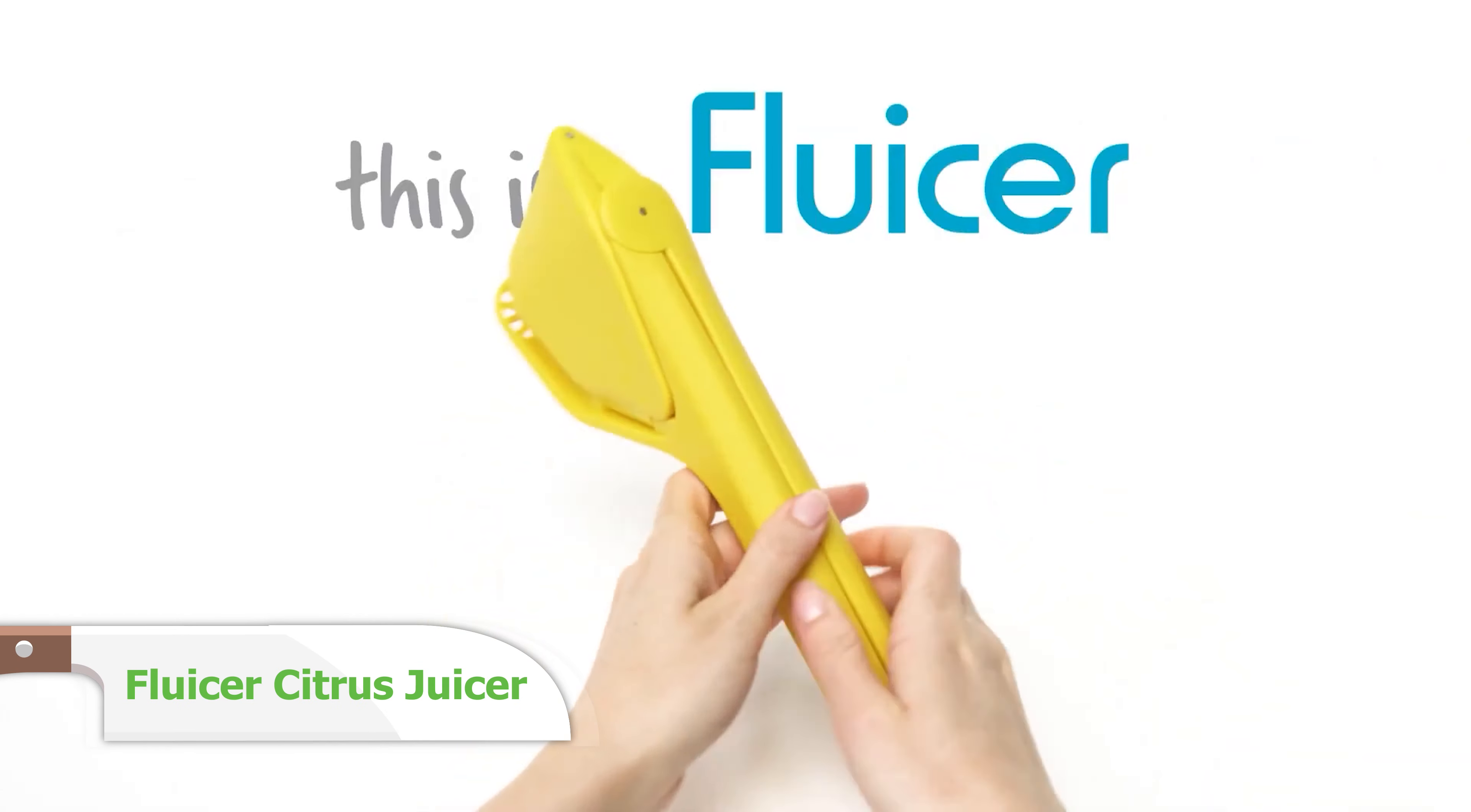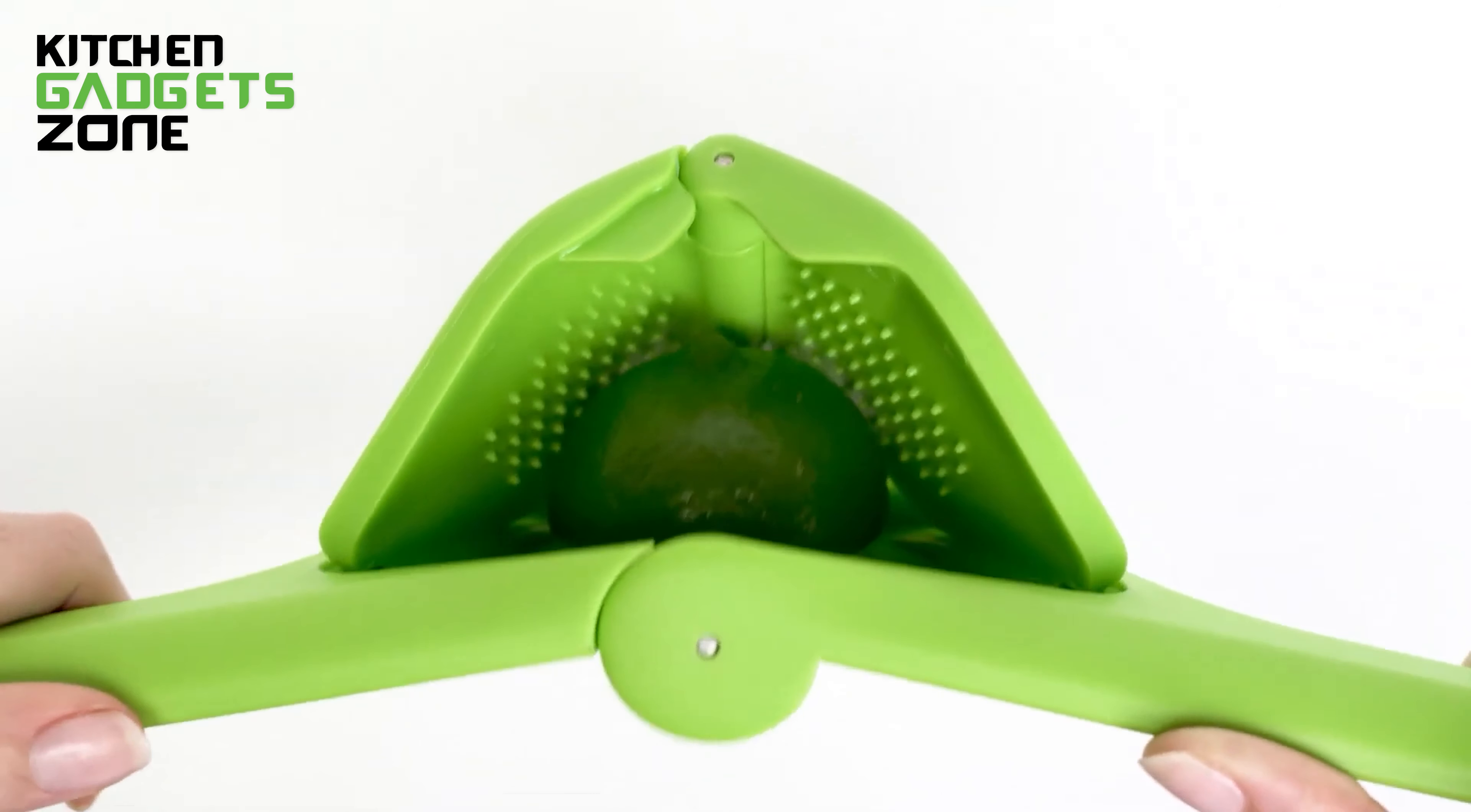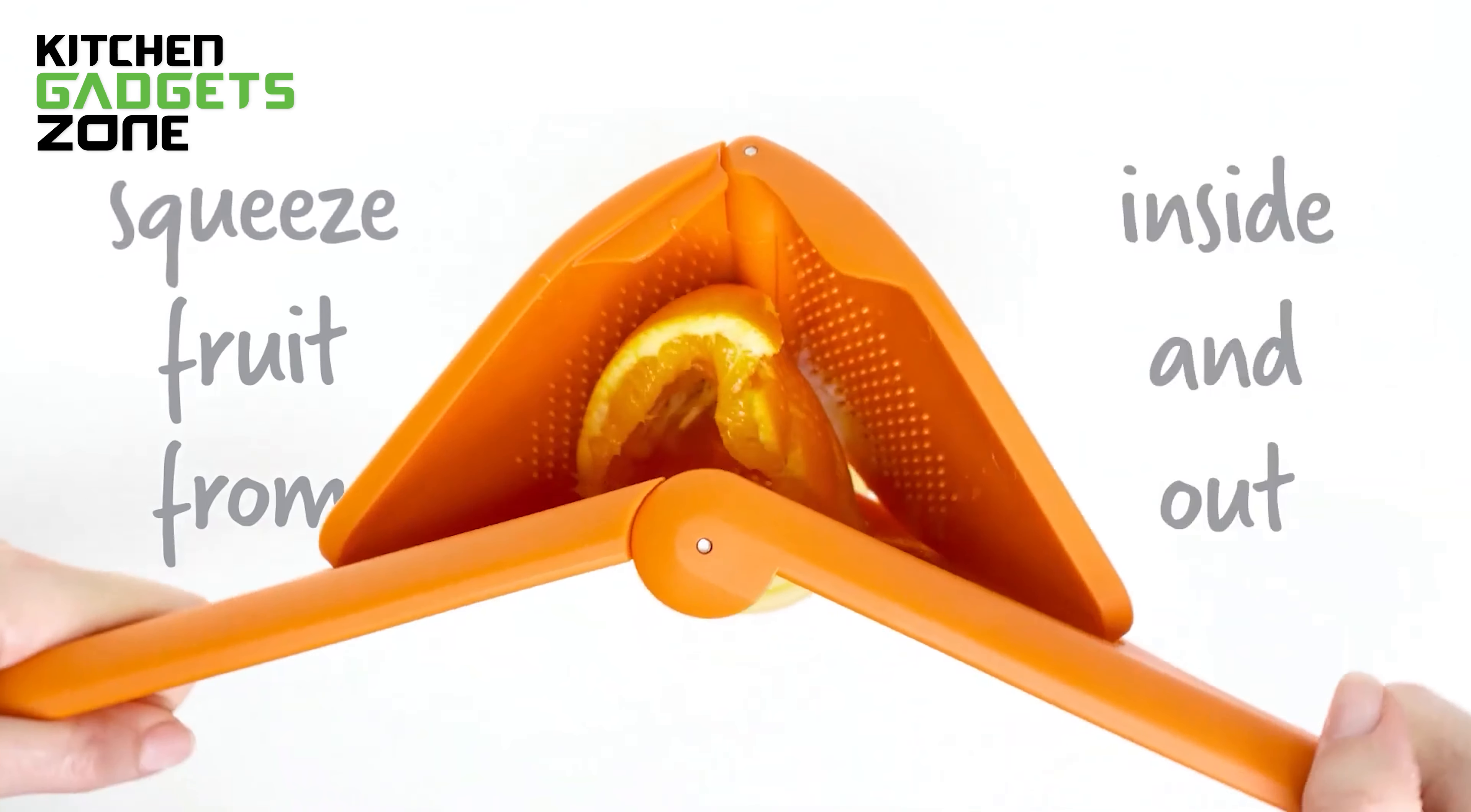Fresh-squeezed citrus juice is a game-changer in the kitchen, but traditional juicers can be bulky and require a lot of effort. Enter the Fluser Citrus Juicer, a slimline, space-saving solution that packs a real punch. Its unique hinged mechanism presses the fruit from the sides, just like juicing with your hands, requiring far less force than squashing it flat.